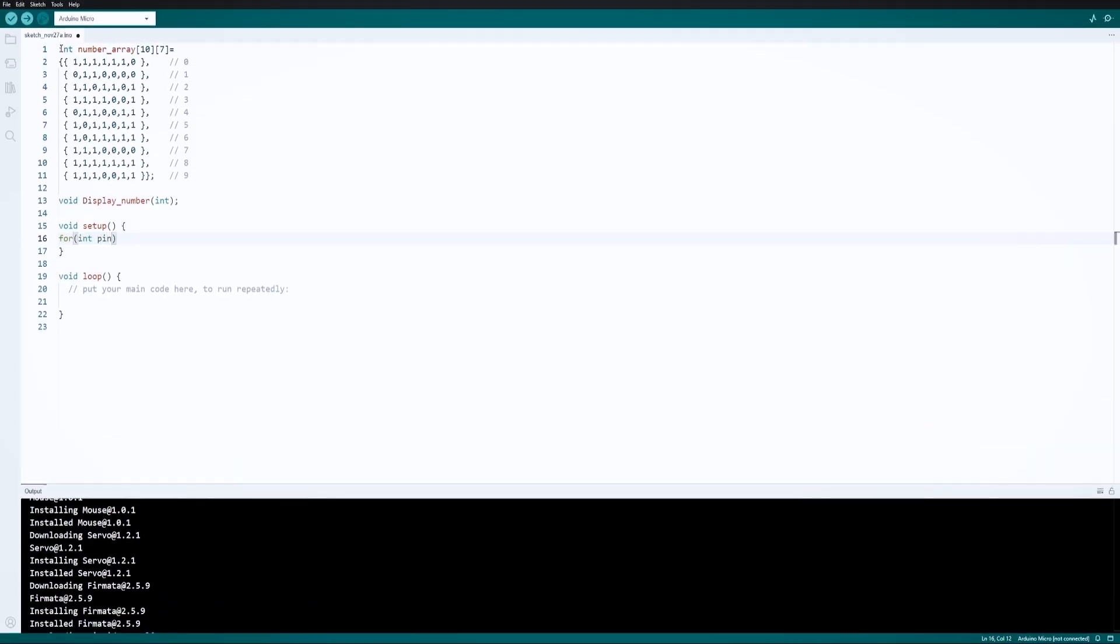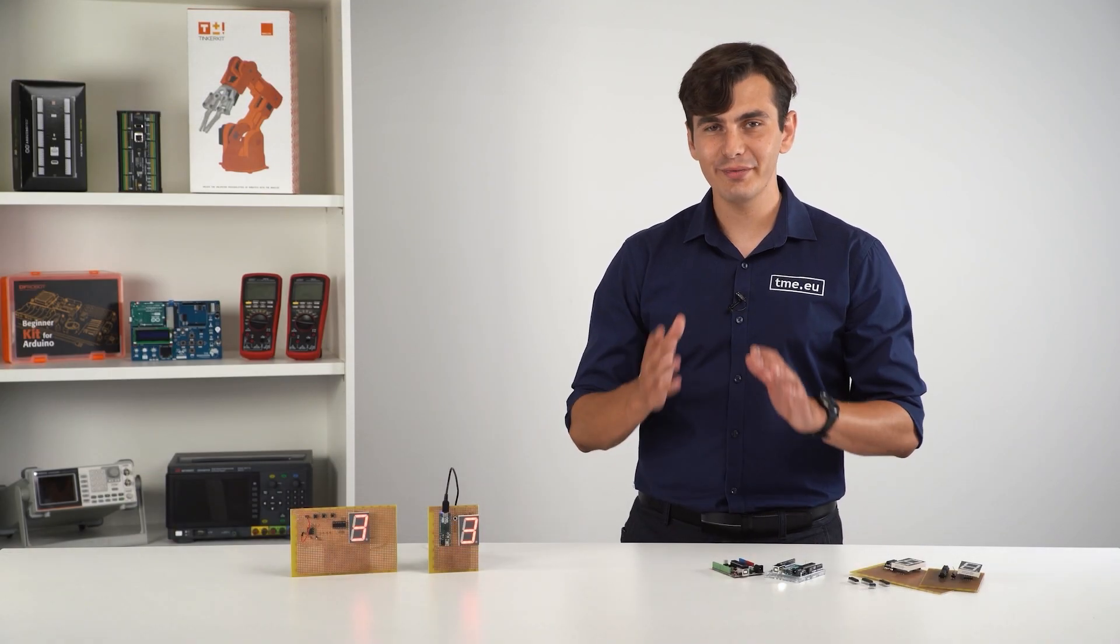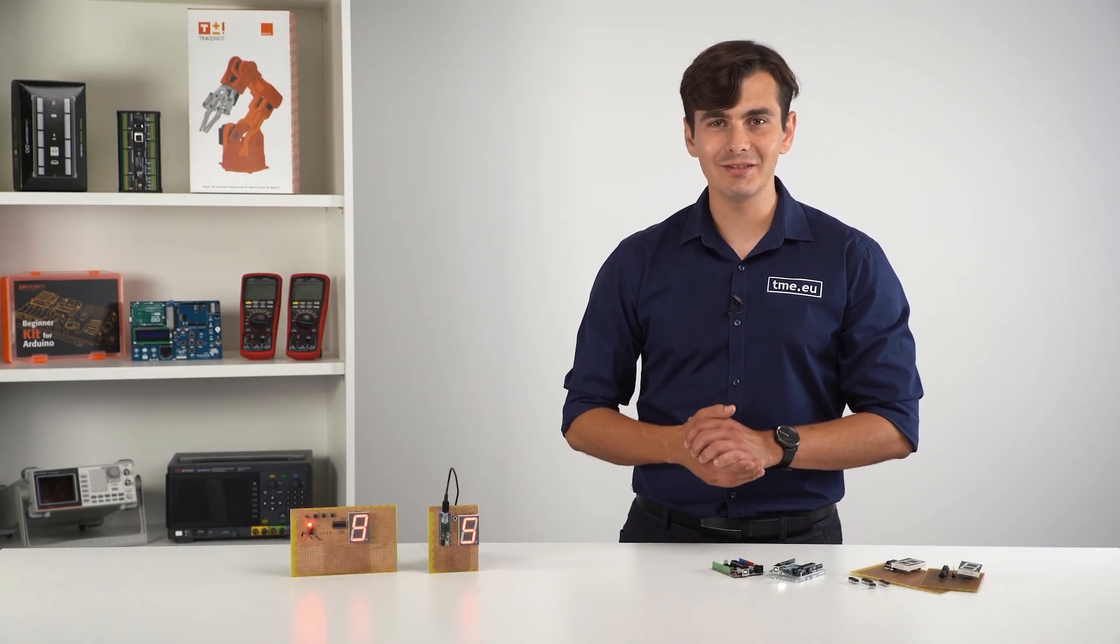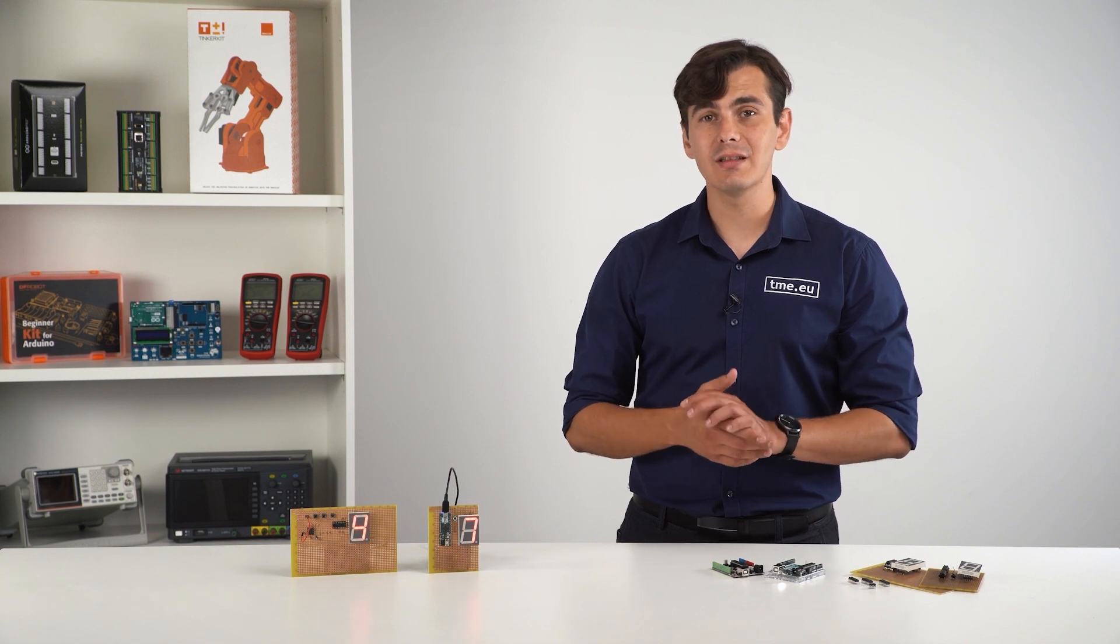Later, we will create a new void function called display number which will be helpful for future code changes. In void setup using for loop, we declared that our Arduino micro digital pins from two to eight will be used as outputs. In the void loop, we create another loop which will count from zero to nine and send that number to our created function. A two second delay is also added between the counting numbers.